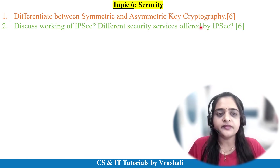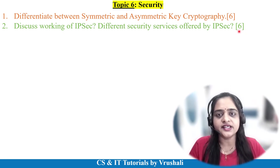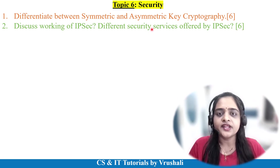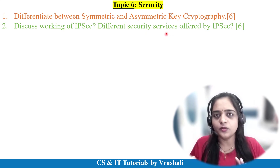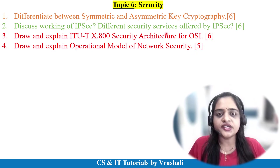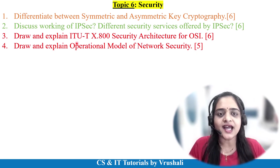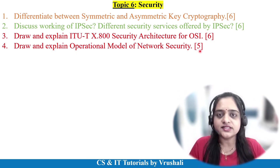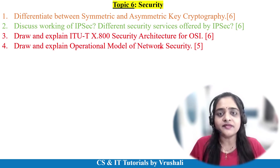The next question is based on the working of IPsec and the security services offered by IPsec for 6 marks — draw the working diagram of IPsec, list all services, and explain each in 1 or 2 points. Next, explain either the ITU security architecture model or the operational model of network security for 6 marks — diagrams are important here; prepare a diagram and explain the working and flow of communication.